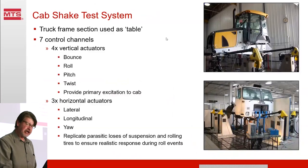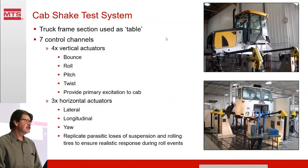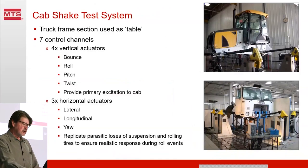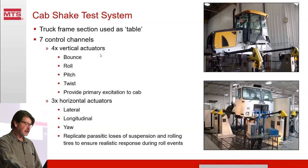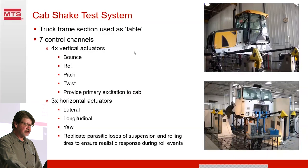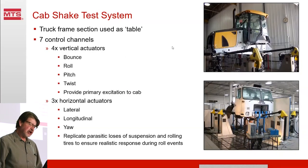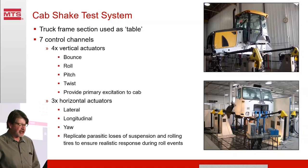This is an example of a cab shake system. Cab shake systems are very common in the heavy truck business, off-road industry, construction, and agricultural sectors. The cabin is a real complete system that needs to be tested and developed ideally on its own in the laboratory. There are typically seven controlled channels: four vertical actuators to control bounce, roll, pitch, and twist — providing the primary excitation to the cabin — plus three horizontal actuators for lateral, longitudinal, and yaw. Their function is to reproduce the damping that's missing from this test in the laboratory.